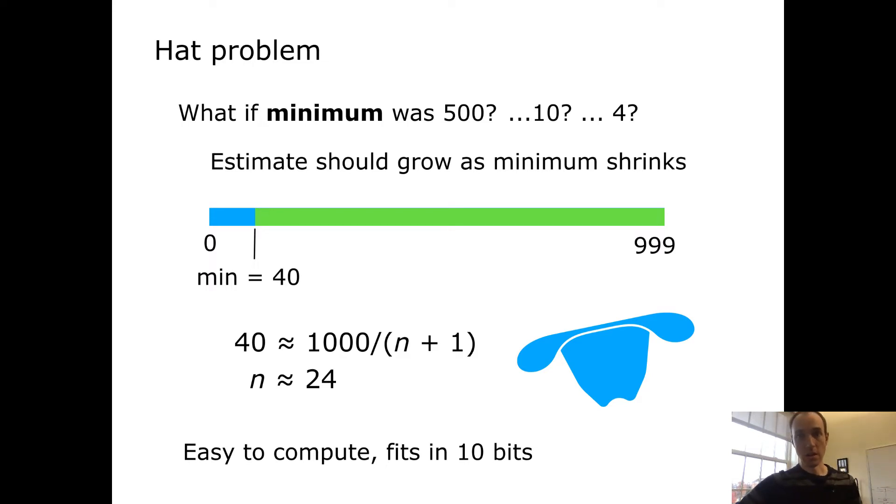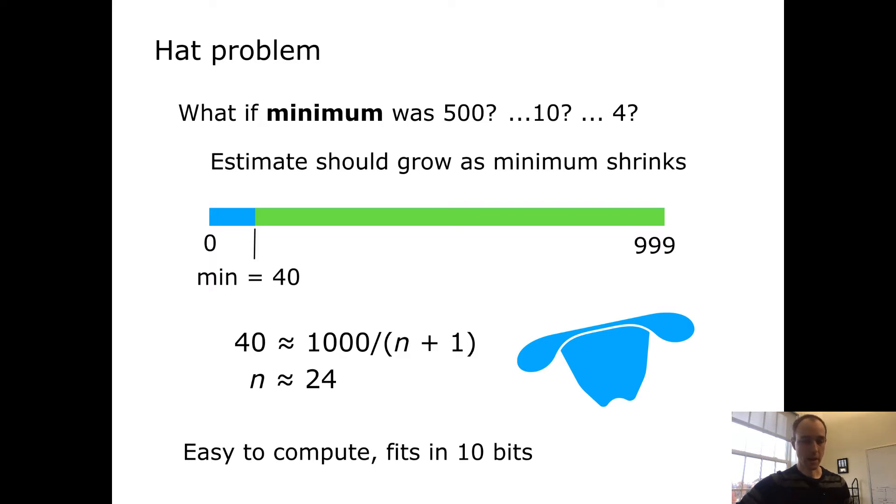If instead the minimum was, say, 10, then we might guess a larger cardinality. And if the minimum were still lower, like 4, we would estimate a still larger cardinality. So as the minimum is shrinking, our estimate of the cardinality should grow. We can convert whatever the minimum is into an estimate of the overall cardinality, basically making an assumption that since the subset was chosen randomly, the cards should be spread uniformly across this range.